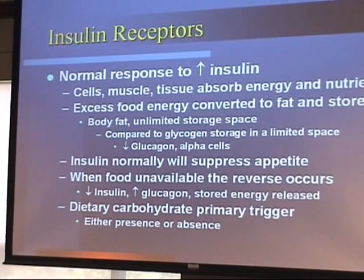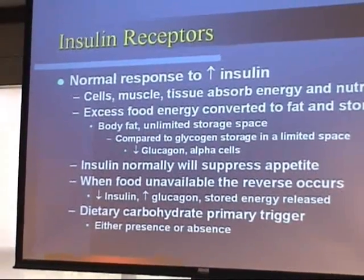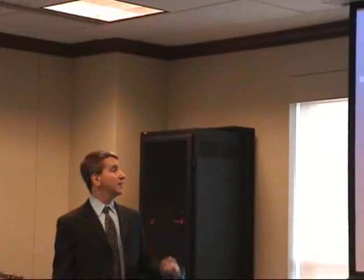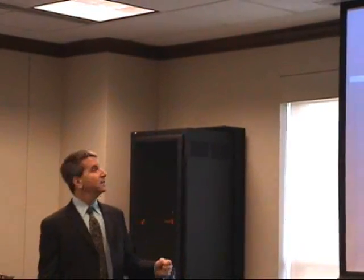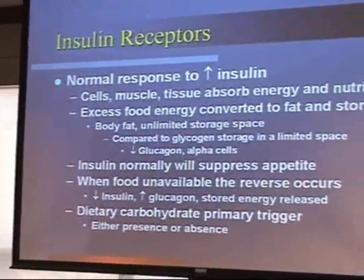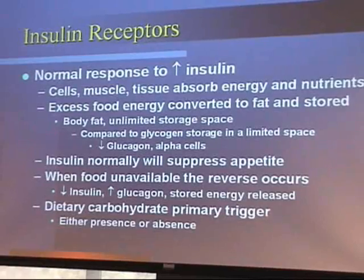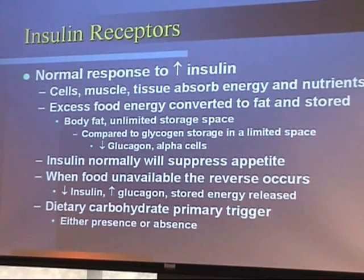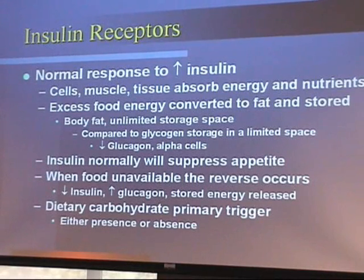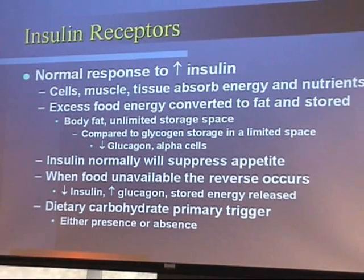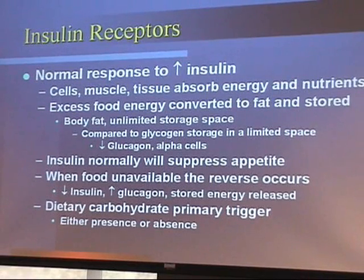We have insulin receptors on both lean and fat tissue throughout the body, and they respond to this increased insulin message. When insulin rises, it goes through receptors and says that there's energy available — nutrients — and the tissues will absorb that energy. When there's excess food, insulin sends a message to the fat tissue that there's excess energy, and it will be stored as body fat. Our body fat is an unlimited storage space that can keep growing and growing, compared to glycogen storage which is limited.